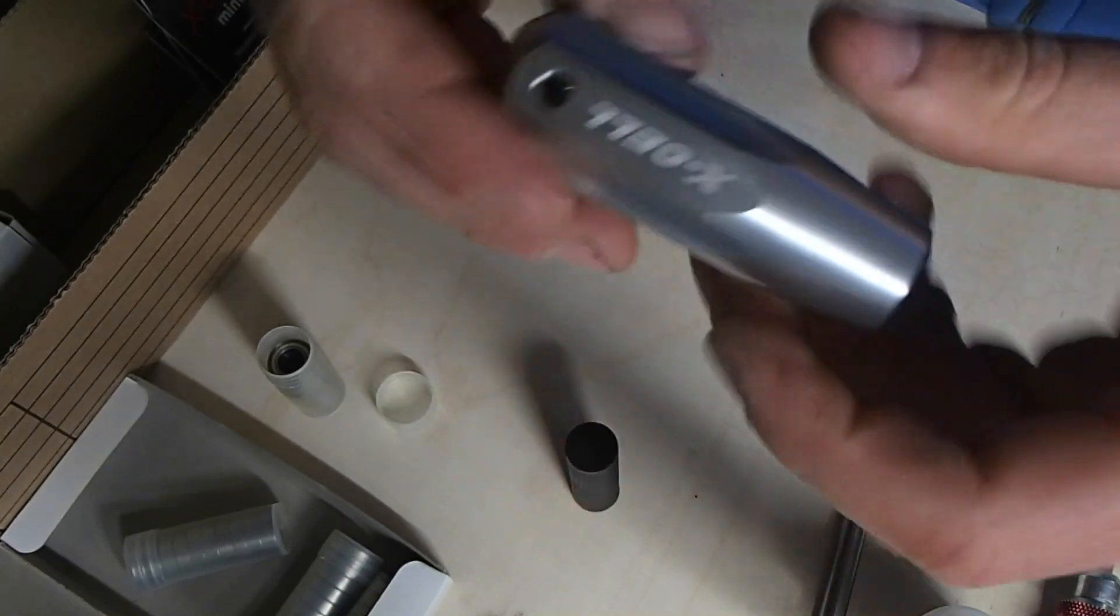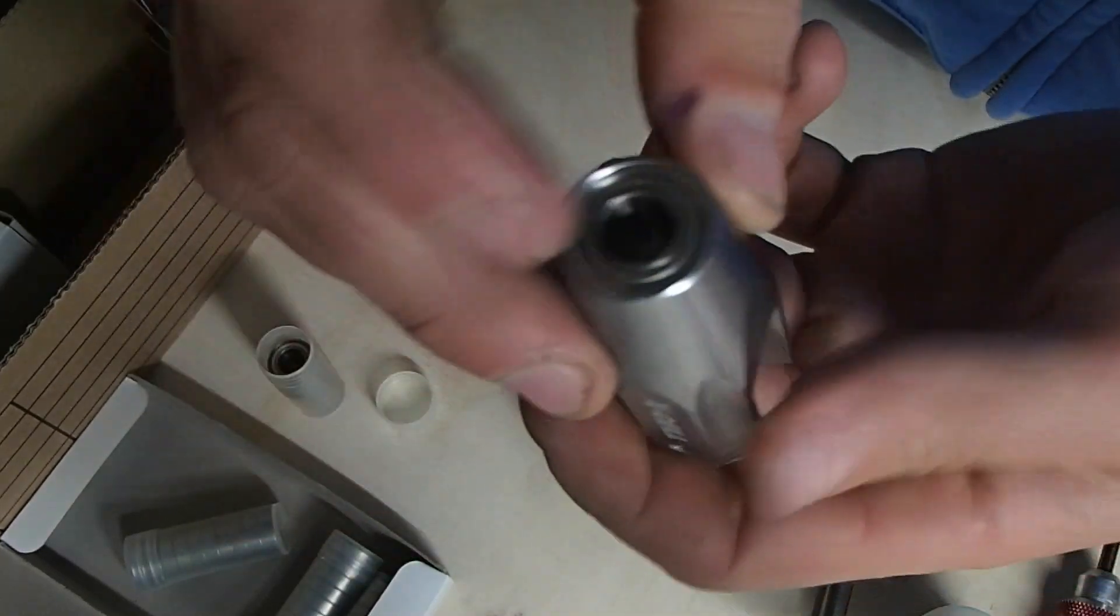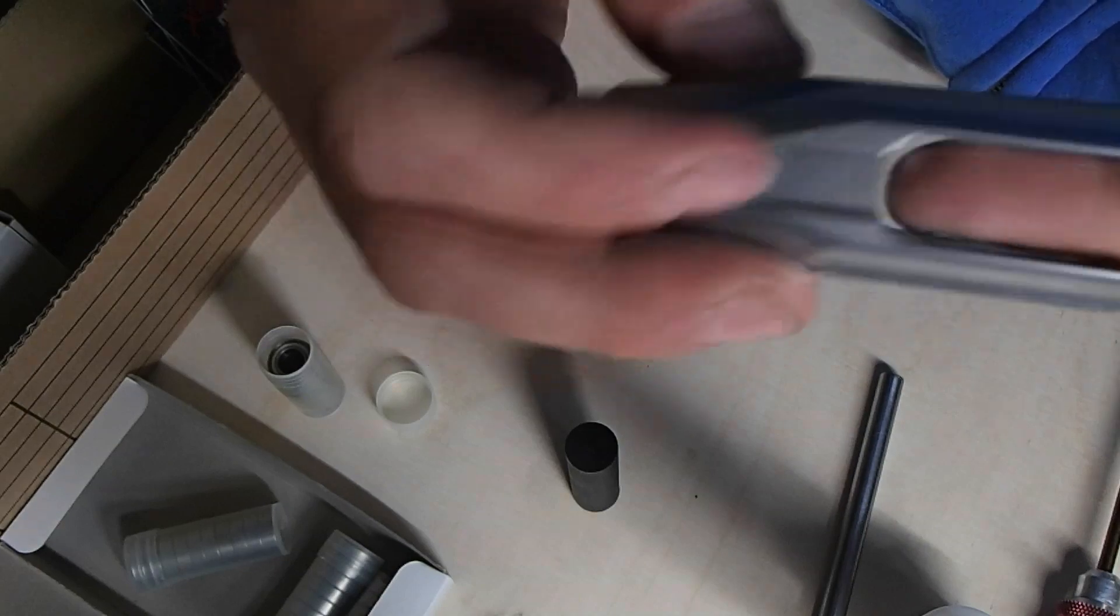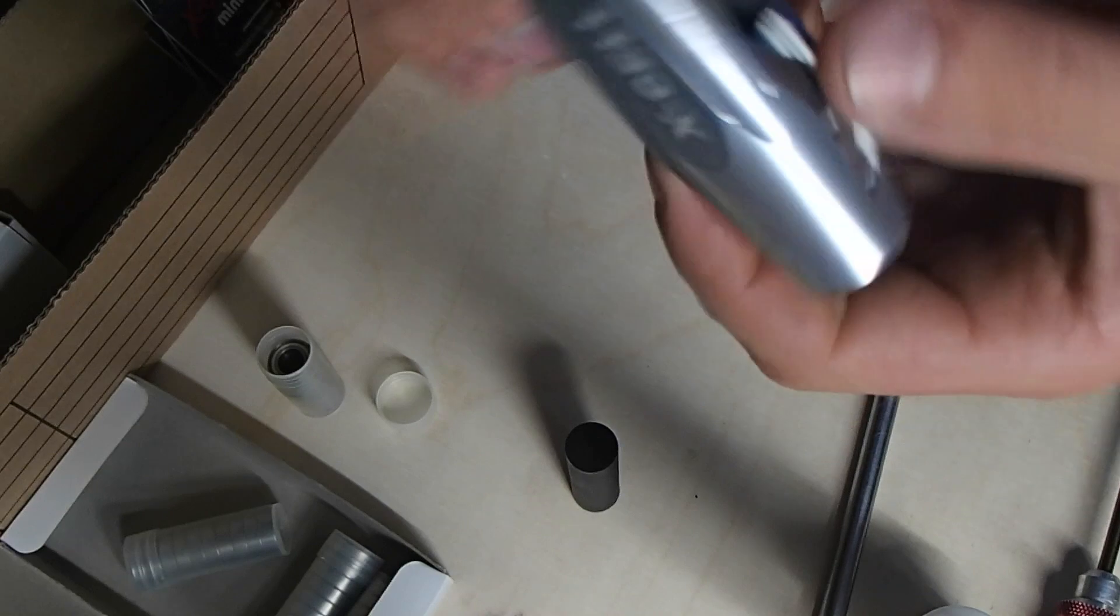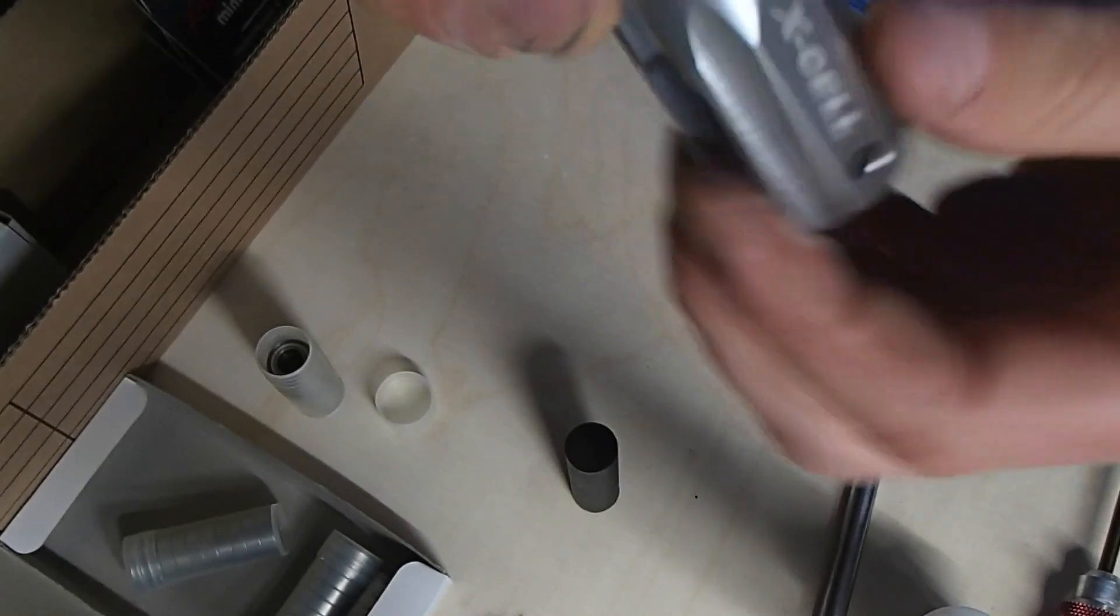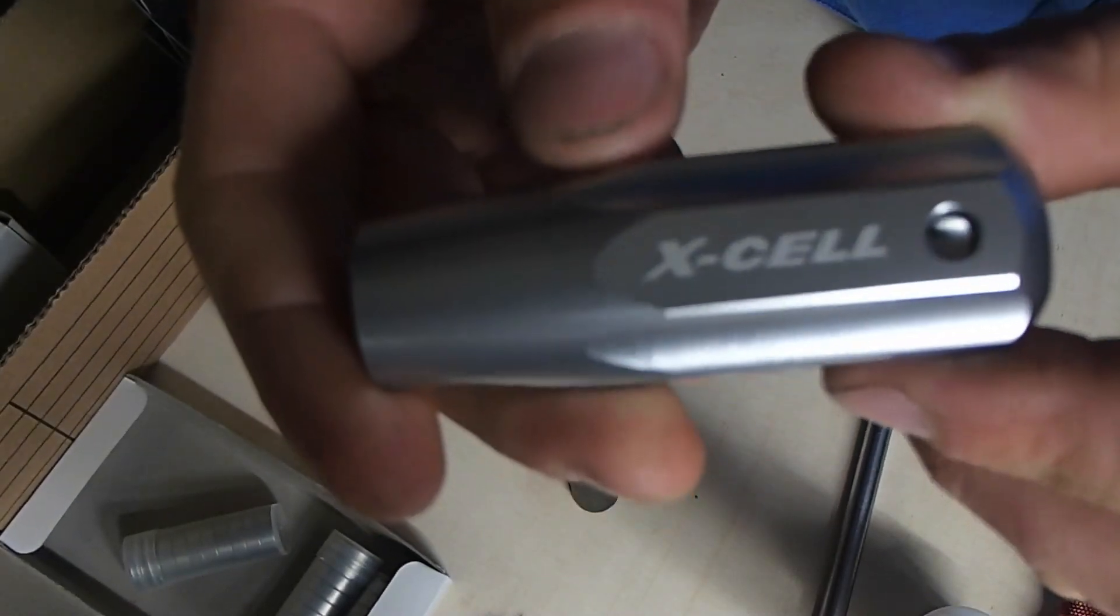So I hope that unconfuses some people if they're confused as to why thrust bearings are having a hard time going into the blade grip. Yeah, Miniature Aircraft signing off.